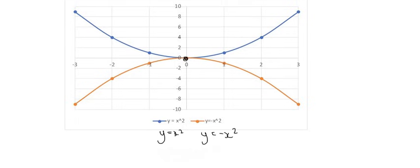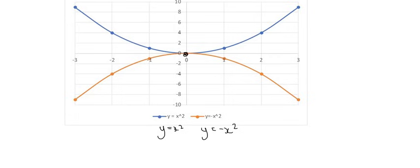But the red one has a negative in the front of its x squared, which turns it into a sad graph. And you can see that that red one is a sad graph. It's upside down.